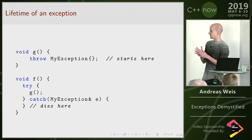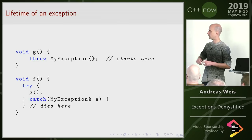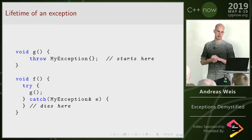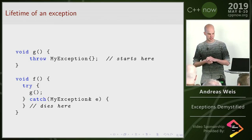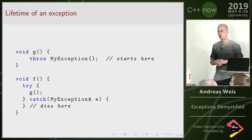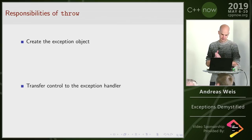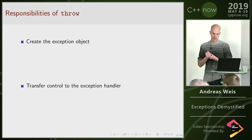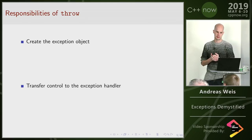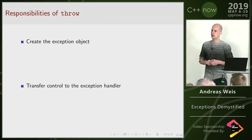Now let's actually talk about exceptions. Usually I have a situation like this: I throw an exception somewhere and catch it in some other function further up the call stack. The lifetime of the exception basically starts at the throw and ends when I leave the catch handler. The throw call has two responsibilities: it needs to create the exception object, and it needs to transfer control to the exception handler. The standard actually doesn't say a whole lot about the creation of the exception object — it just says it will allocate memory in an unspecified way.